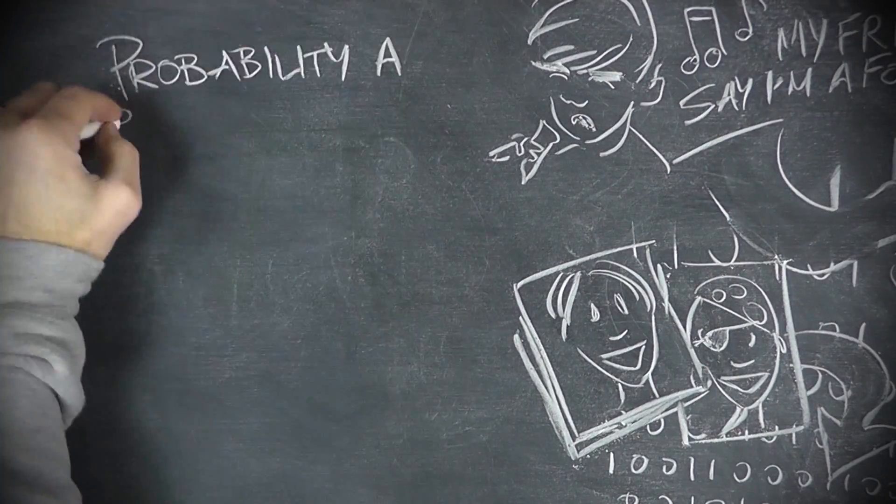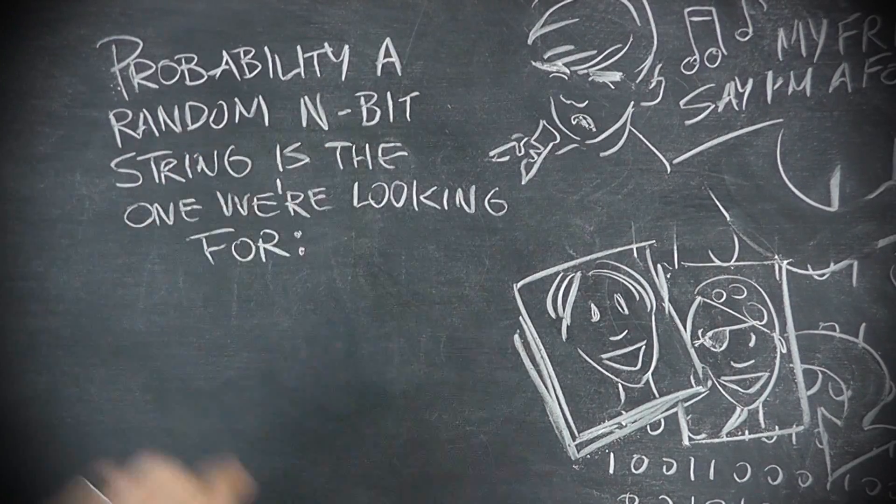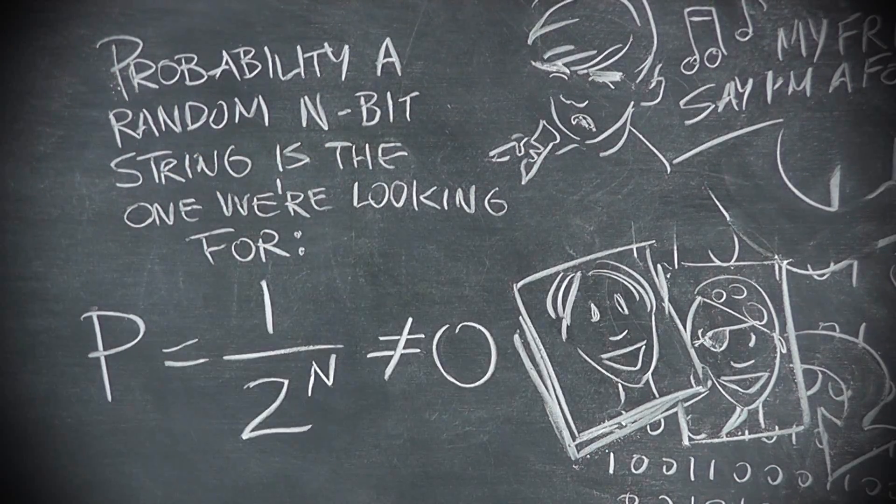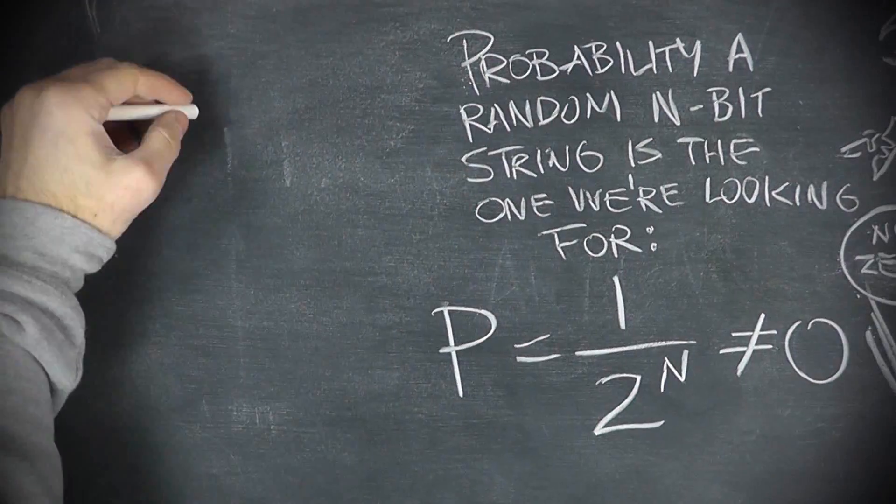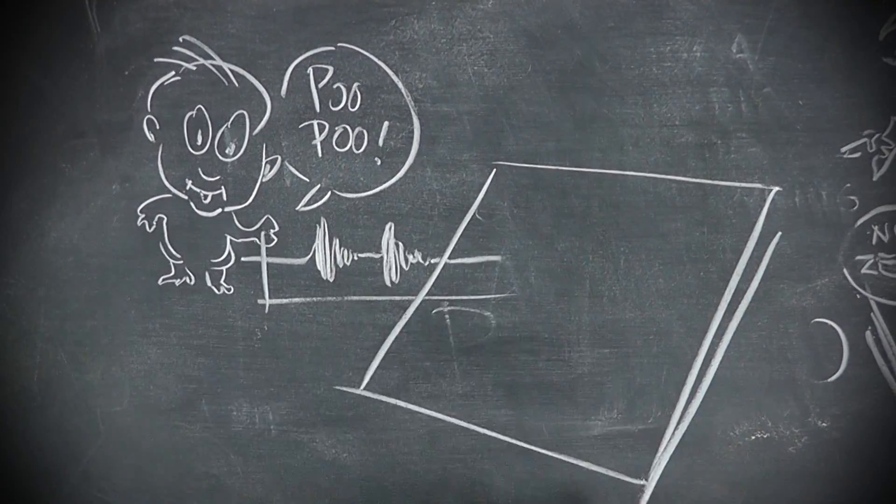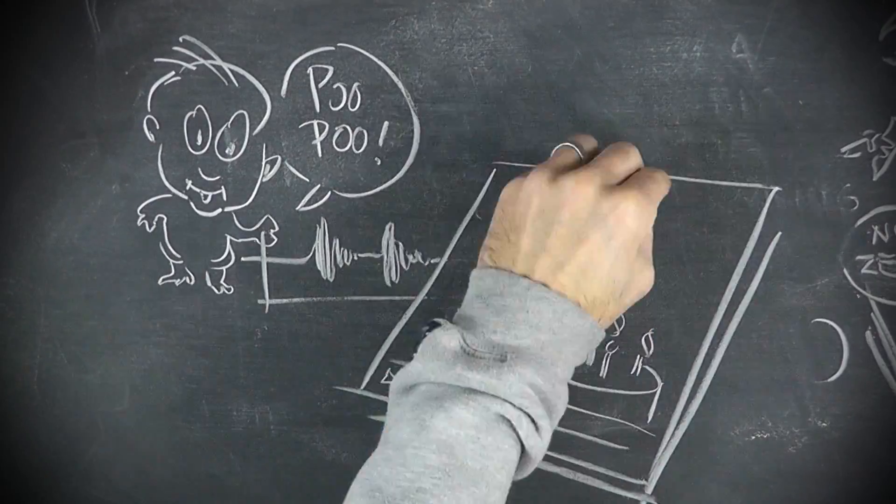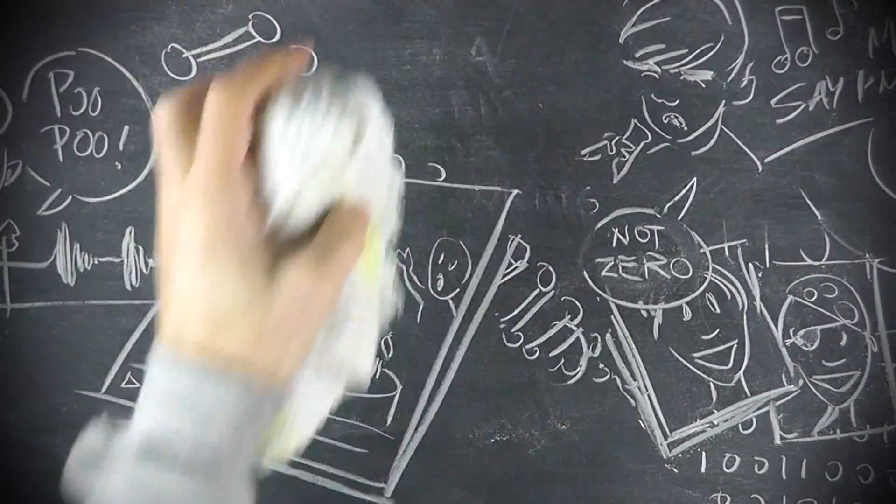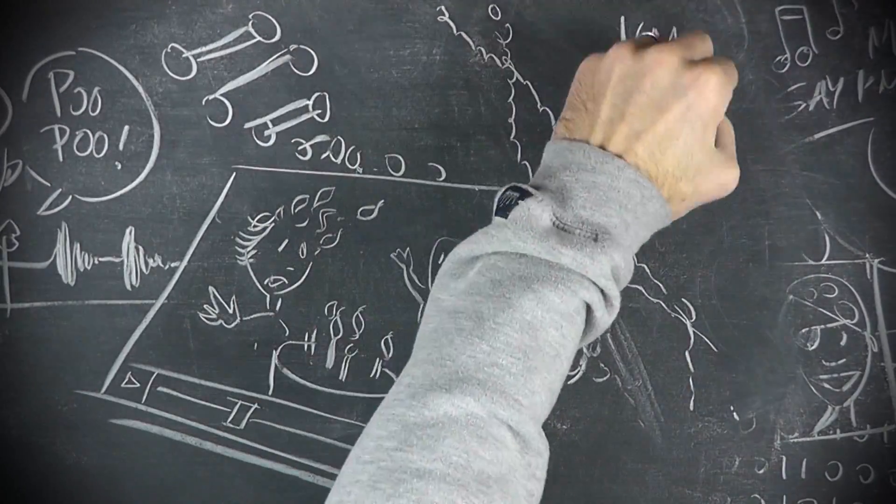It's not likely that we'll find a particular sequence of digits quickly, but we can rest assured that it's in there somewhere. There's the sound of your first words in there. There's the video of your tenth birthday party. Your DNA is in Pi, along with the DNA of every other creature.